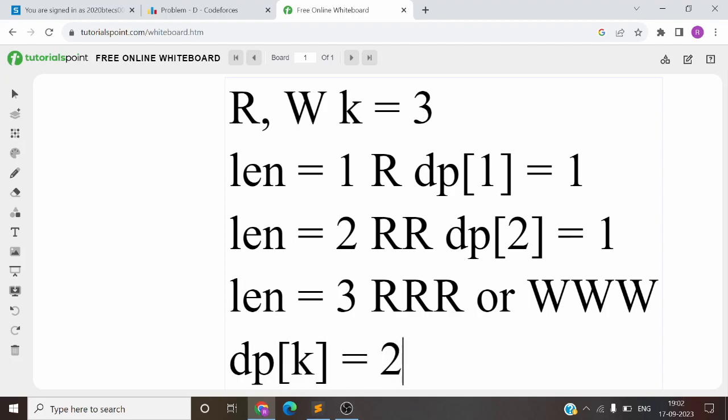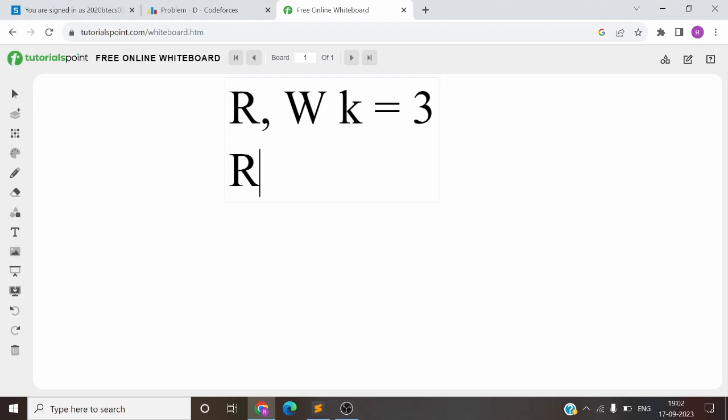So what will be the state of the DP? When we are at a position, something like this, what will be the next element? Either we will add R, or we will add W. And then if we add W, the group will be complete.